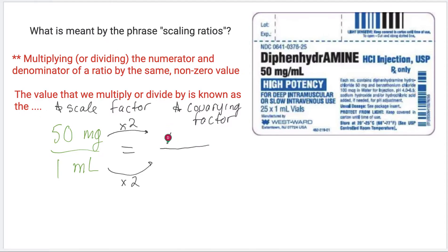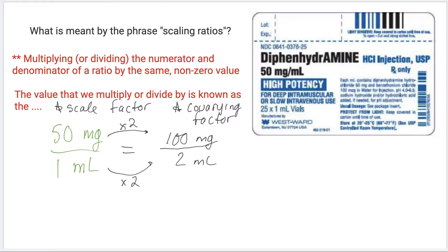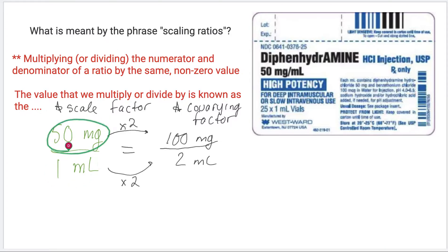If I take 50 times 2, I get 100 milligrams. And if I take 1 milliliter times 2, I get 2 milliliters. These are equivalent ratios. The unit ratio is just the simplified ratio where the denominator is one unit. Scaling is kind of the opposite — we can make the numerator and denominator larger or smaller by a factor. What we just did is find an equivalent ratio to 50 milligrams per 1 ml: if a patient receives 2 milliliters of this medication, they would be getting 100 milligrams. A patient getting 1 milliliter gets 50 milligrams; a patient getting 2 milliliters gets 100 milligrams.